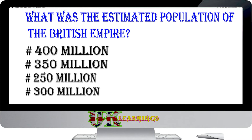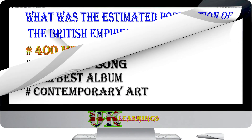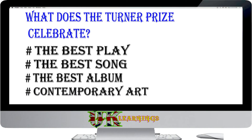What was the estimated population of the British Empire? 400 million, 350 million, 250 million, 300 million. The answer is 400 million. During the Victorian period, the British Empire grew to cover all of India, Australia and large parts of Africa. It became the largest empire the world has ever seen, with an estimated population of more than 400 million people.